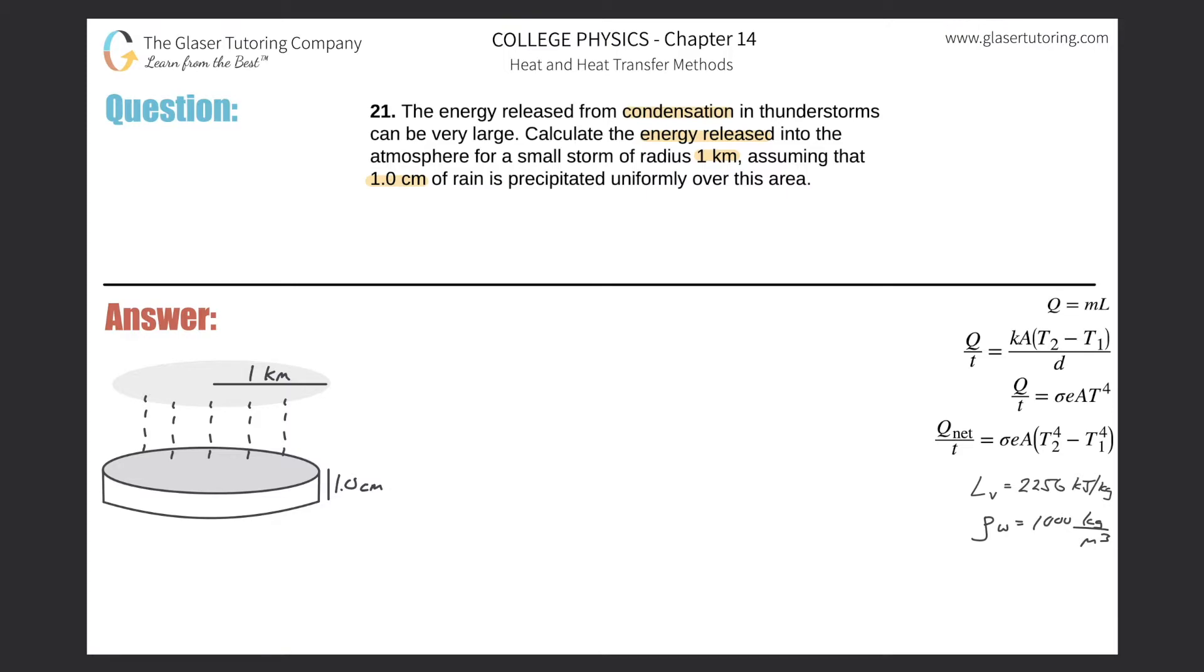It represents the length of the depth of the cylindrical volume here that would be created from the storm. Hopefully that makes sense. The rain, we're going to assume no wind, so it just falls straight down.